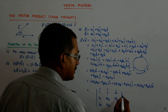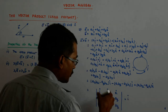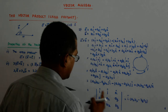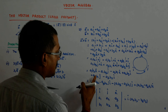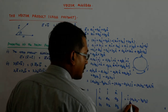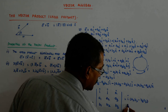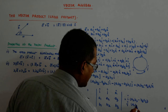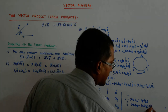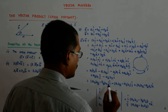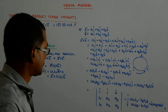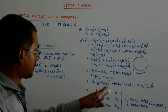Now expand this determinant. The i-hat term gives a2 b3 minus b2 a3. Minus j-hat times (a1 b3 minus b1 a3). Plus k-hat times (a1 b2 minus a2 b1). This matches exactly what we derived. So the determinant form is correct.